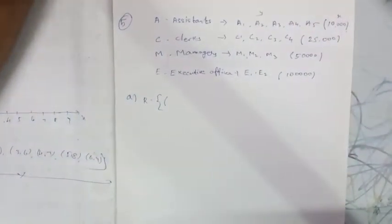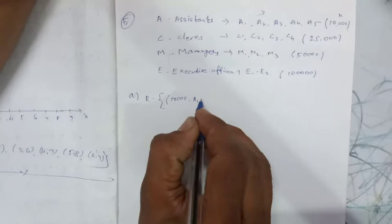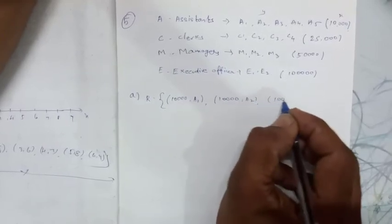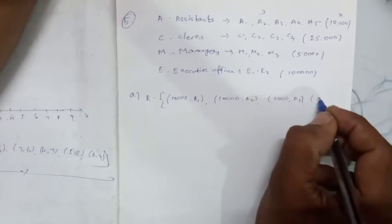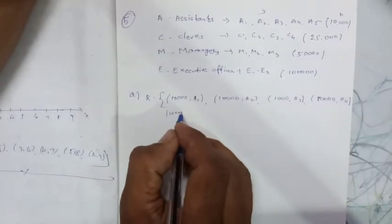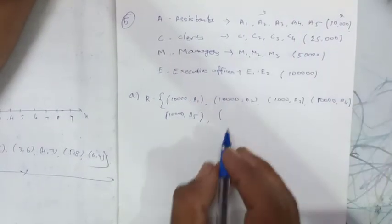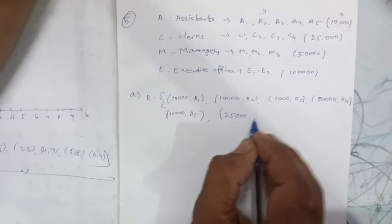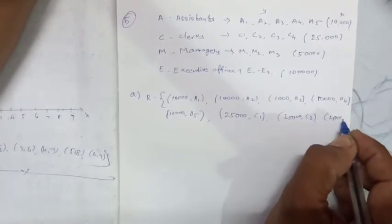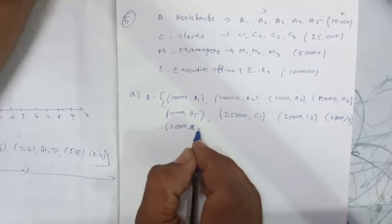Now writing the ordered pairs: salary 10,000 goes to assistants — so (10000, A1), (10000, A2), (10000, A3), (10000, A4), (10000, A5). Next, salary 25,000 goes to clerks — (25000, C1), (25000, C2), (25000, C3), (25000, C4).